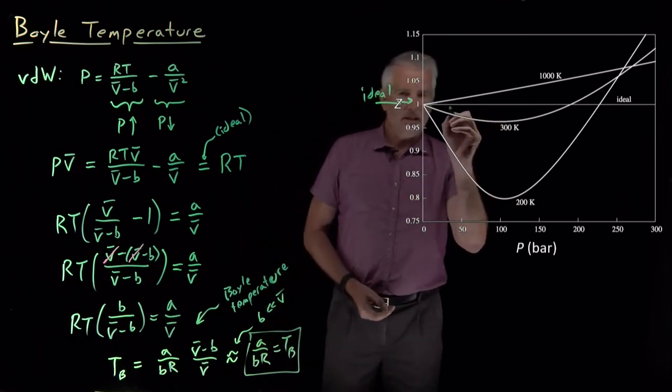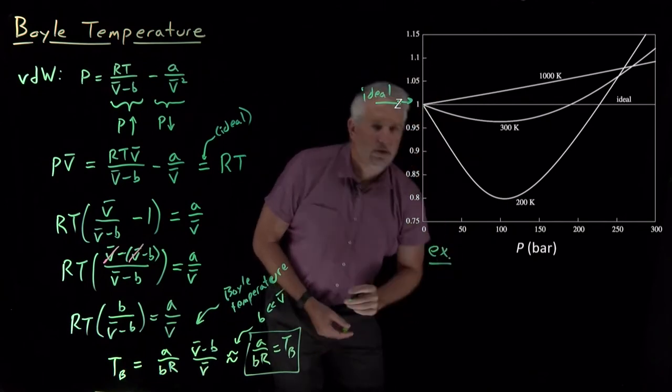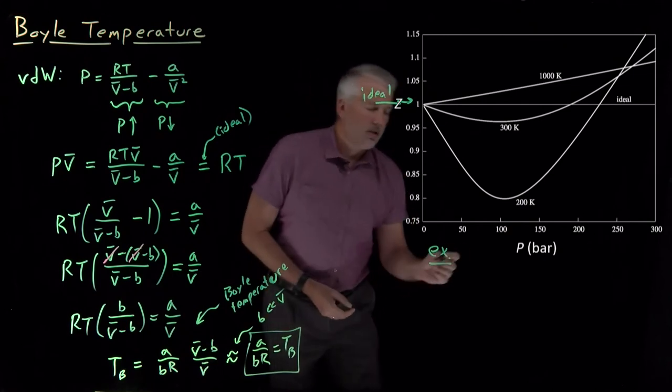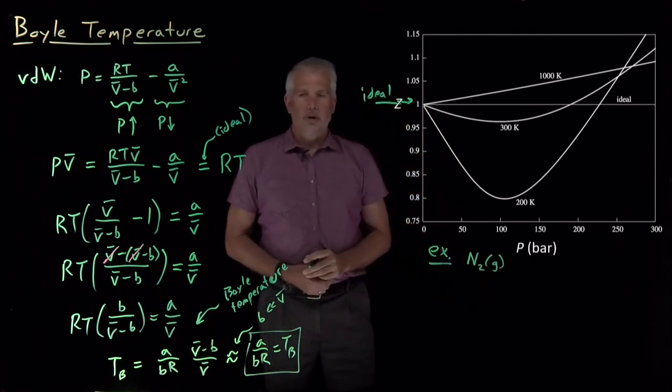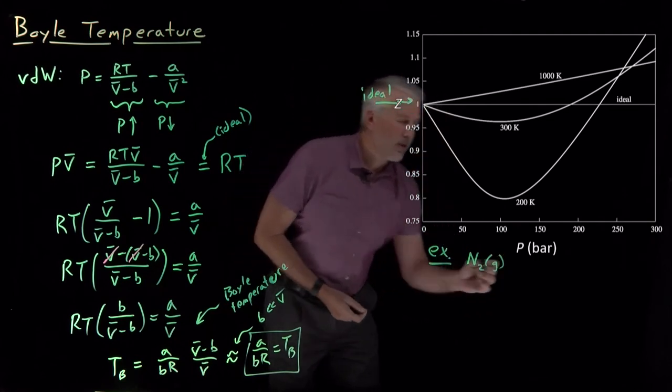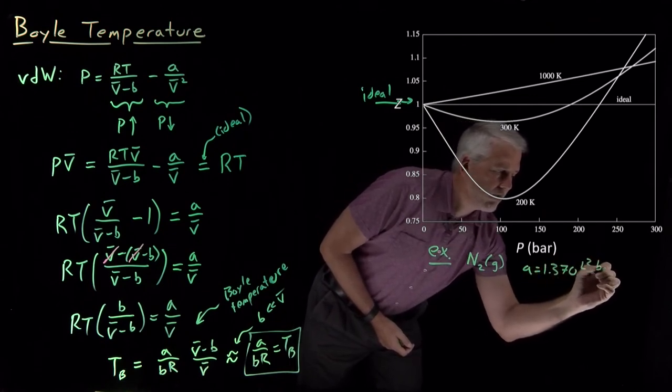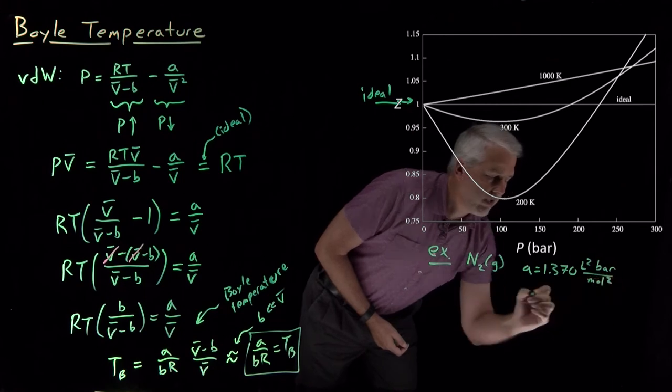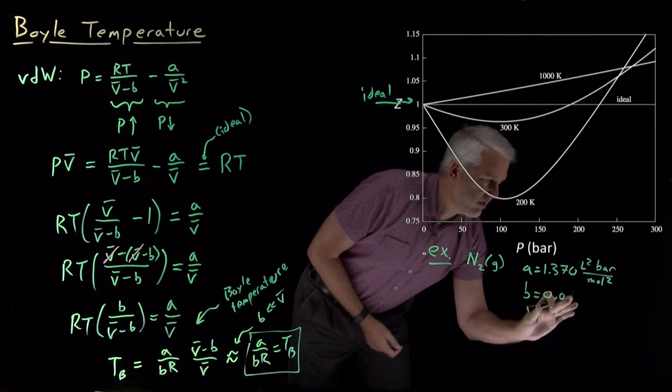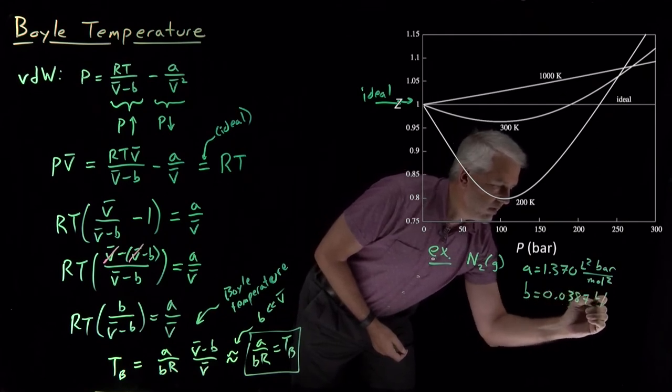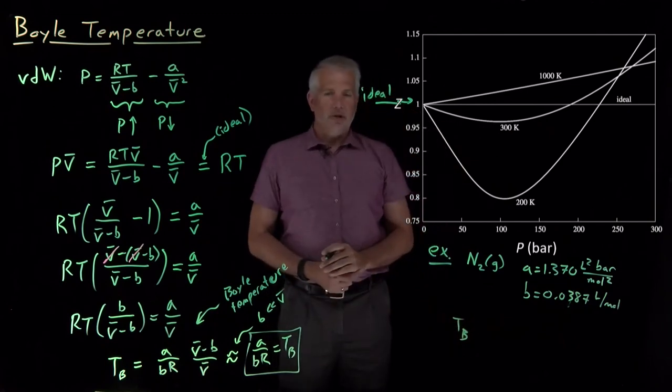And what that's telling us is, in fact, let's go ahead and do an example before I decorate that graph. If we do that for a particular gas, one that we've talked about the van der Waals constants for before is nitrogen gas, where we know the value of A, and we know the value of B. Oops, that should be a three.